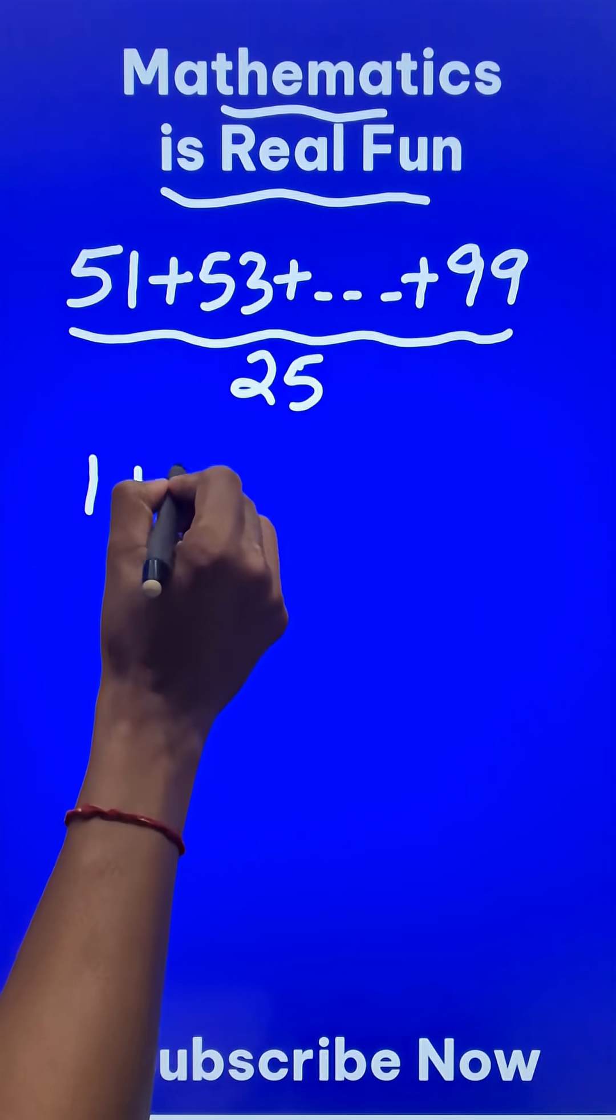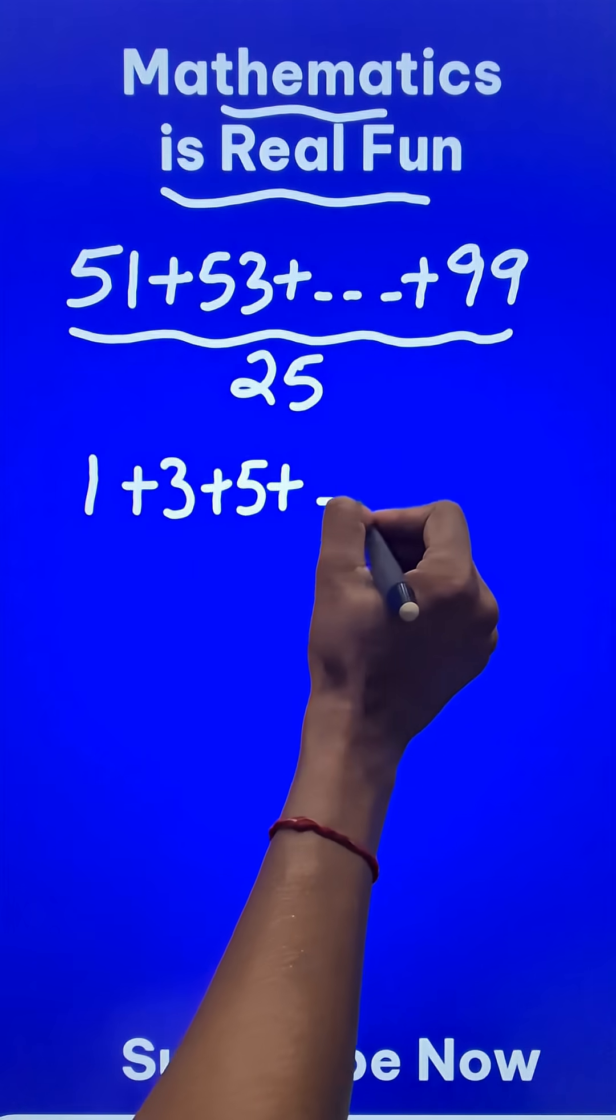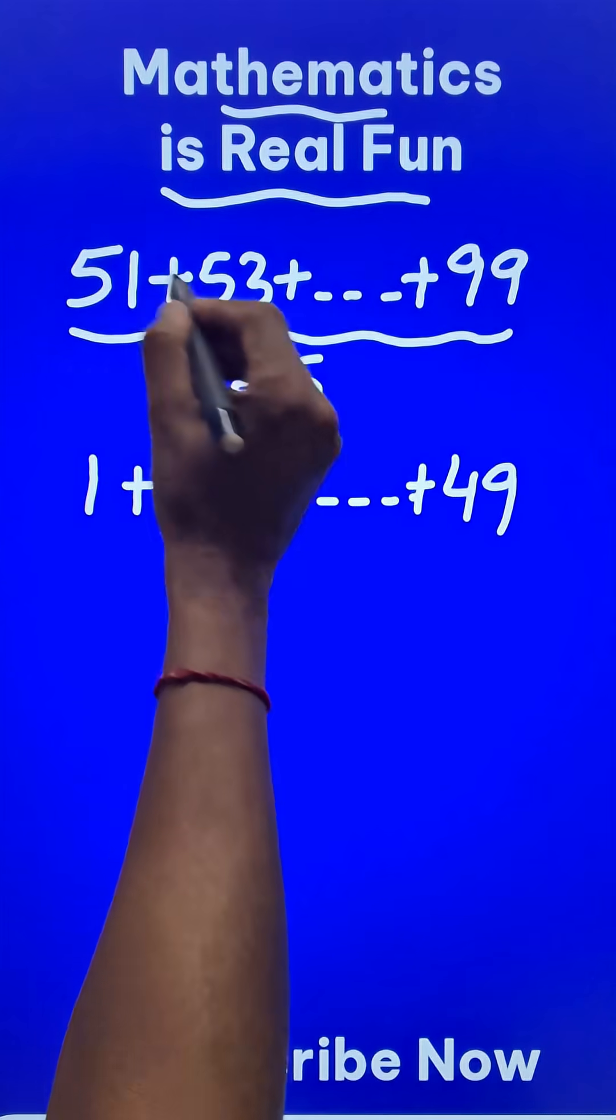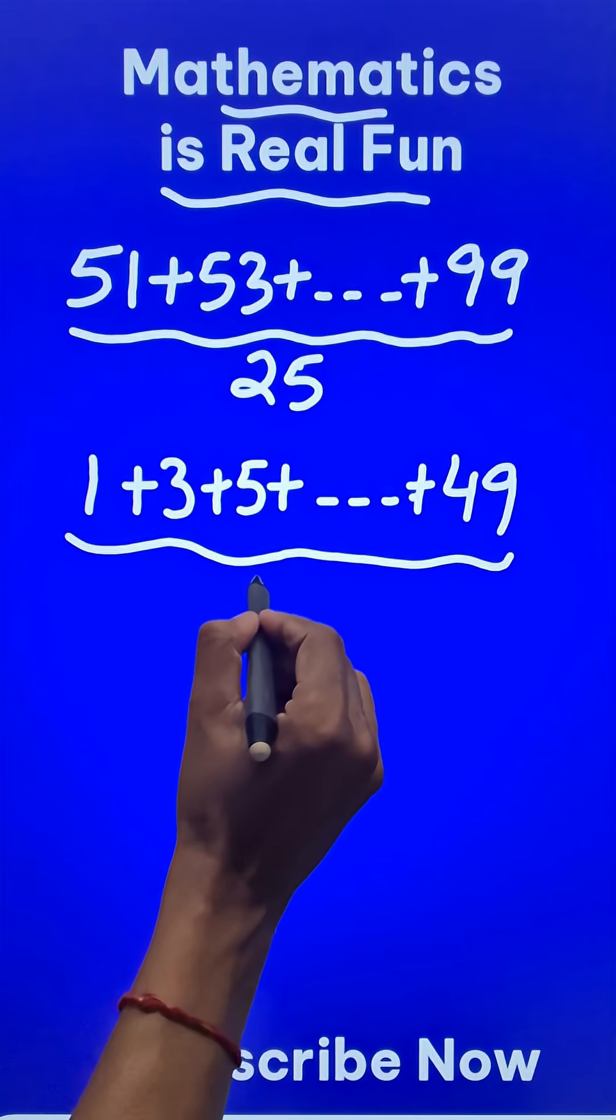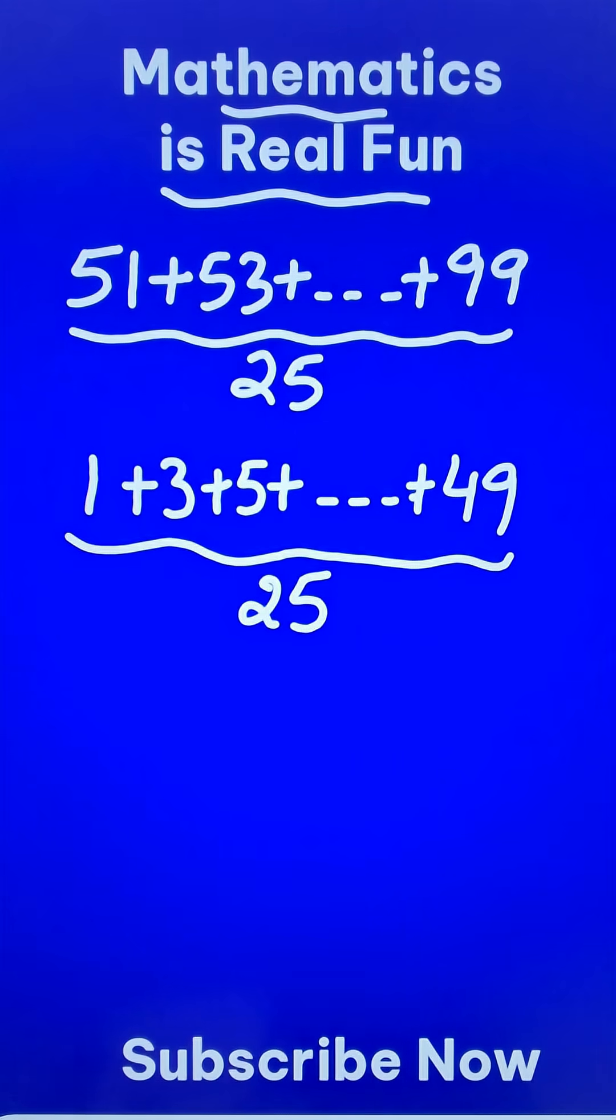Now how many odd numbers are missing starting from 1? If you see 1, 3, 5 up to the number 49, all of them are missing in this sequence, right? And how many are these numbers? They are again 25 odd numbers.